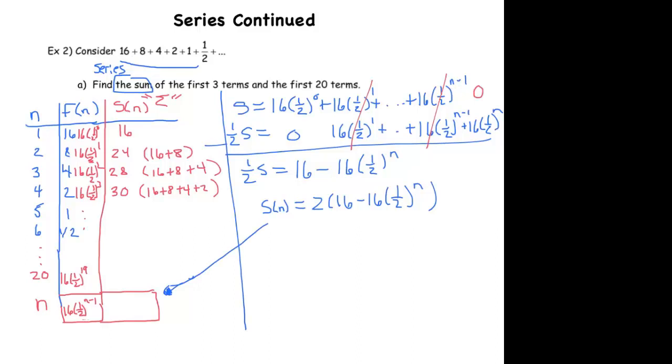So I'm going to put my formula, which is 2 times 16, minus 16 times one half to the n. And this is exactly what we wanted, because now I've got a closed form representation of the sum of the first n terms of this geometric sequence.